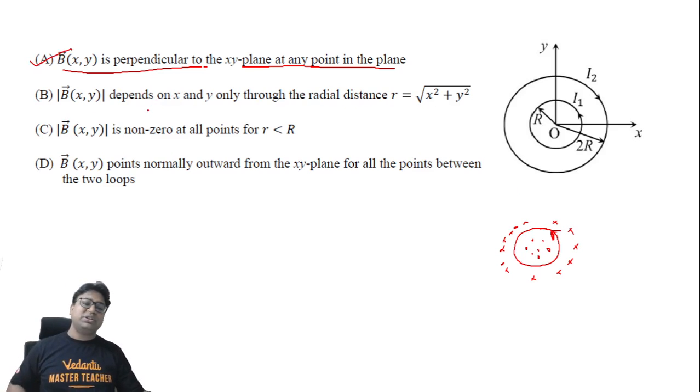Now option B says it depends only on the radial distance, which also seems correct because I can clearly see the radial symmetry here. Even if I rotate the XY axis about the Z axis, nothing will change. By symmetry I can say that this option is also correct.